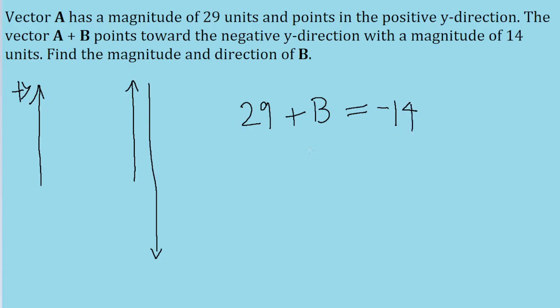So all we got to do is algebraically solve this for B by taking negative 14 and subtracting 29. And in doing so, we find a value of negative 43.